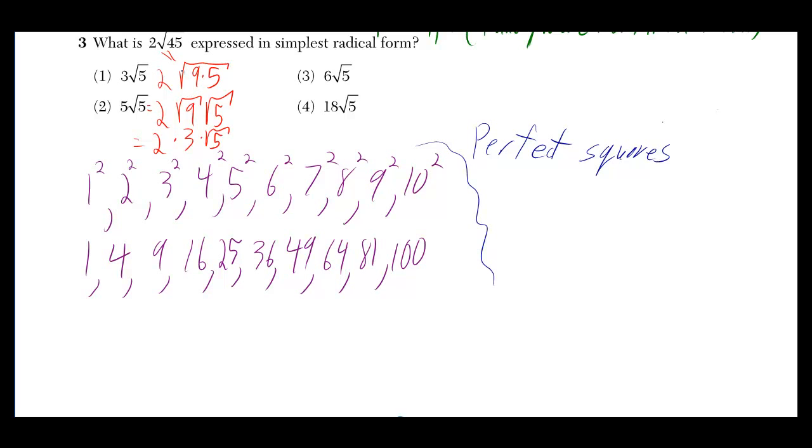But then there's a rule that you can change square root of 9 times 5 into square root of 9 times square root of 5. Why would you want to do that? Because the square root of 9 is a whole number, it's just 3. So now you can write it as 2 times 3 times square root of 5, which is just equal to 6 times square root of 5.